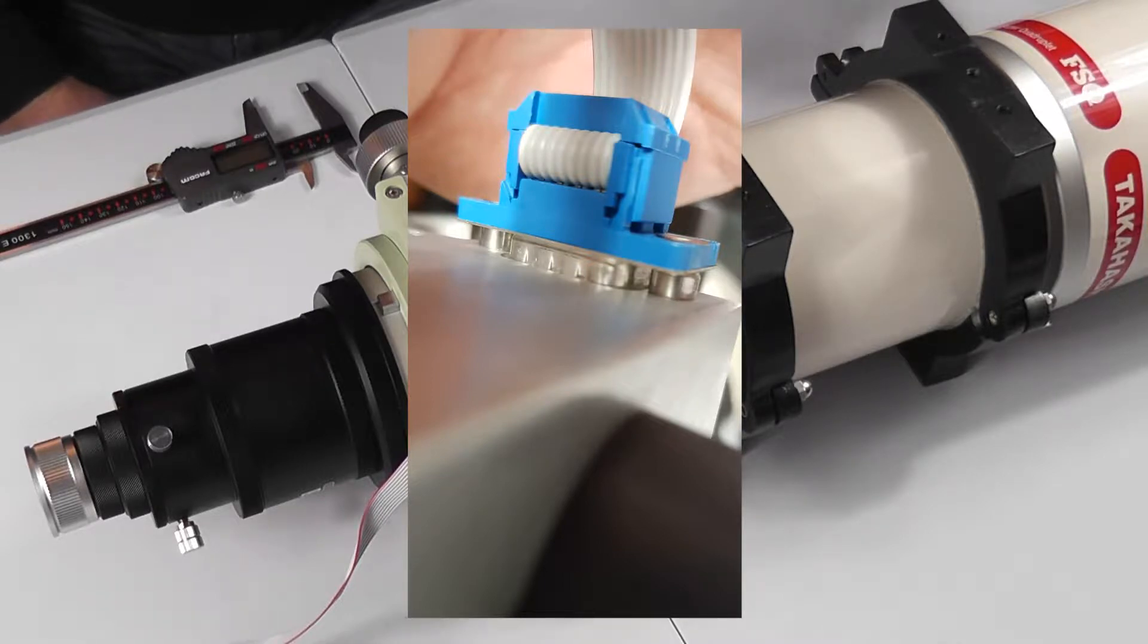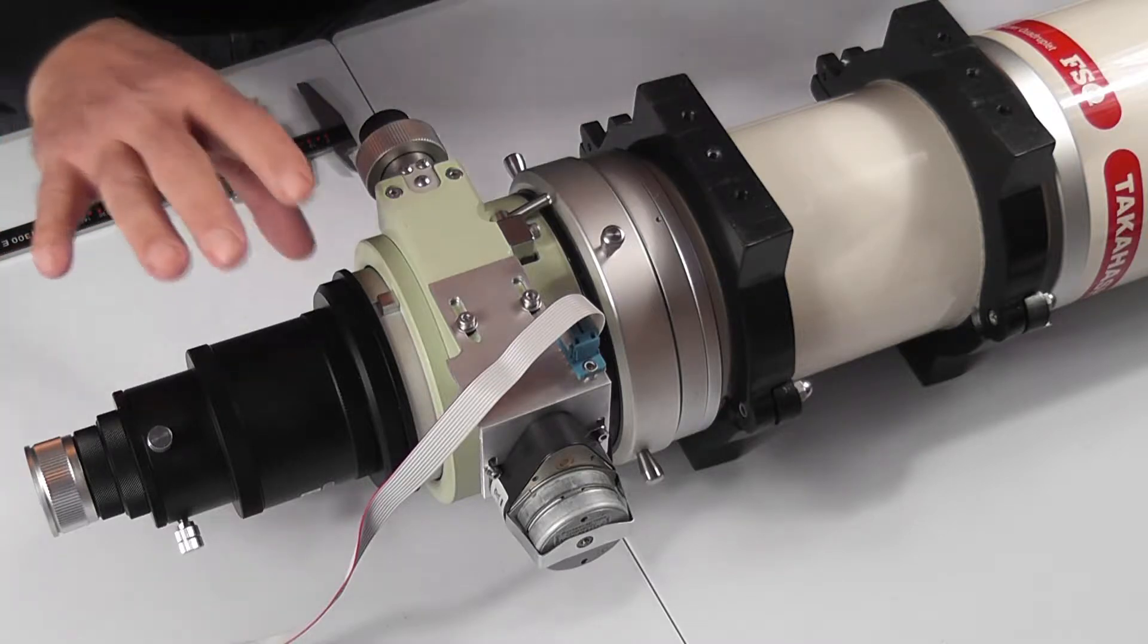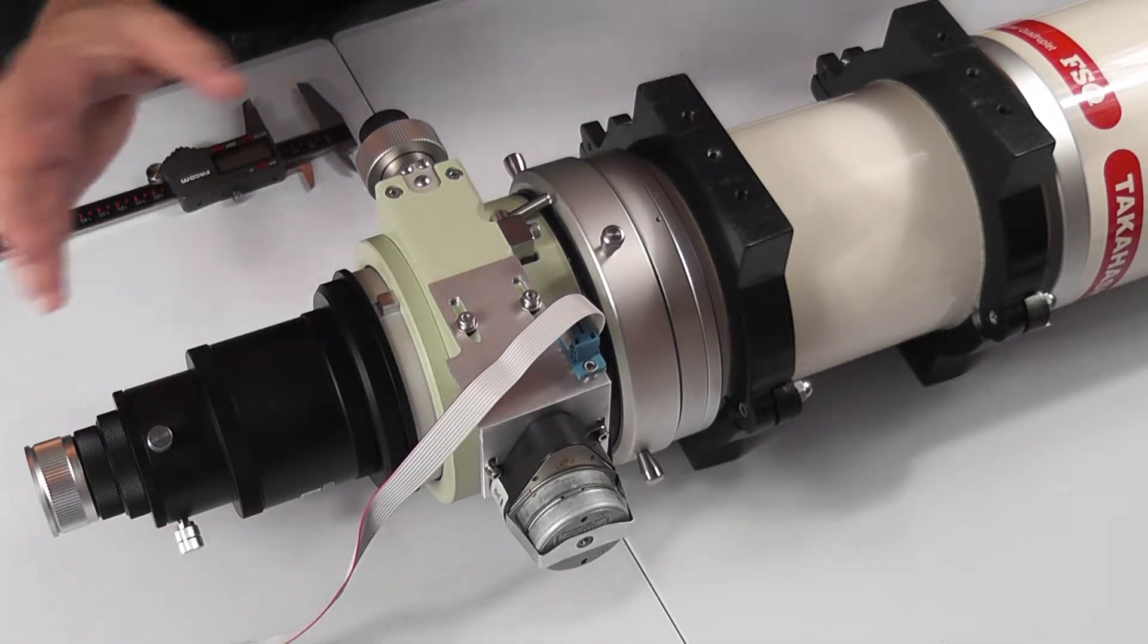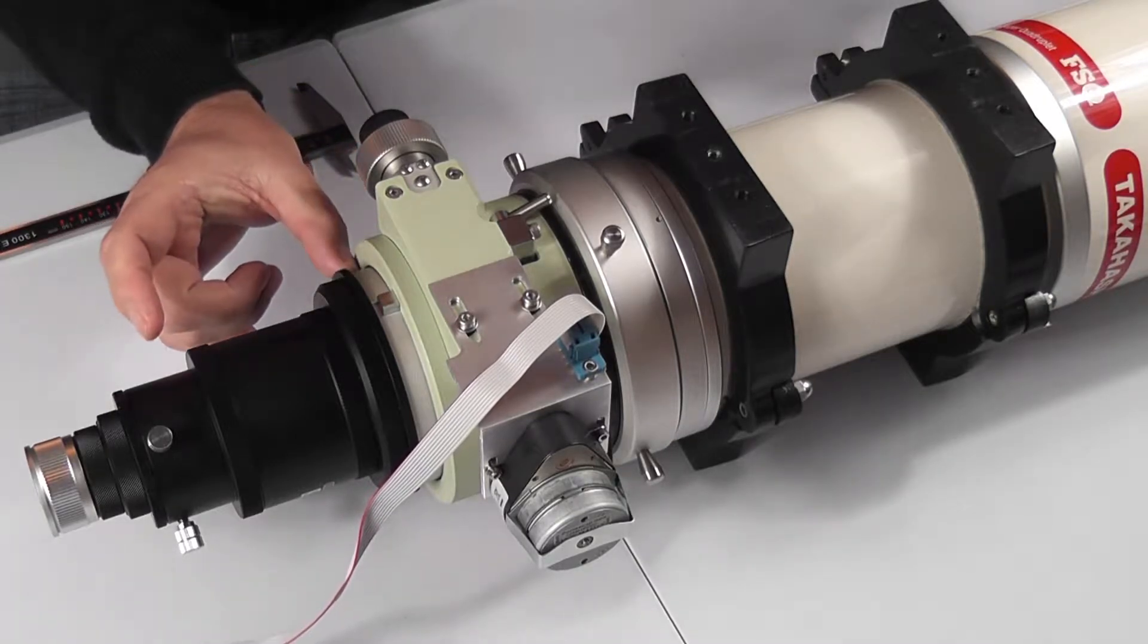So the first thing that you need to do before all this setting up is that you need to know how long your focus travel is. Now some focusers have increments drawn on the side, printed on the side.